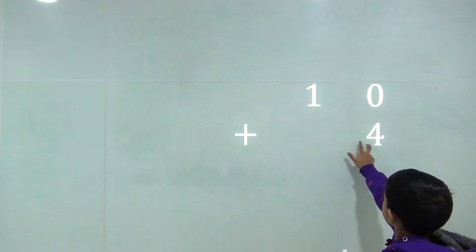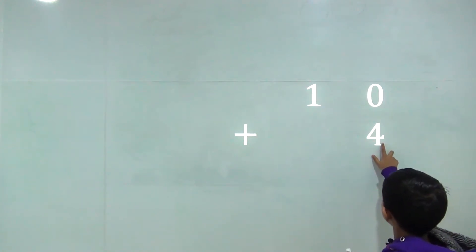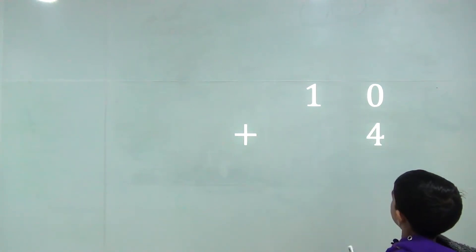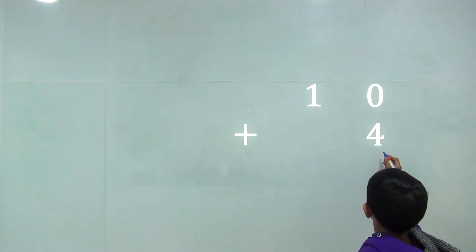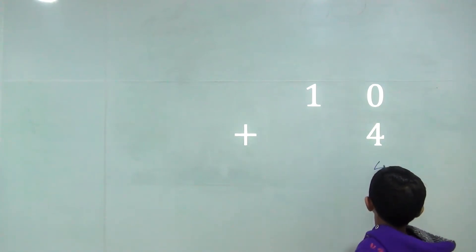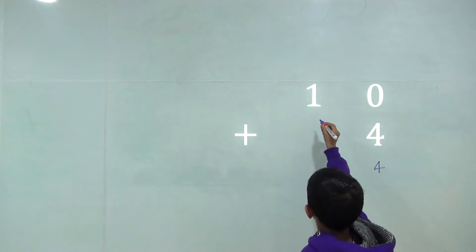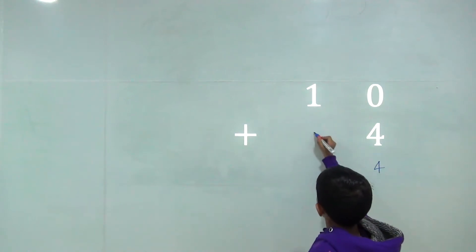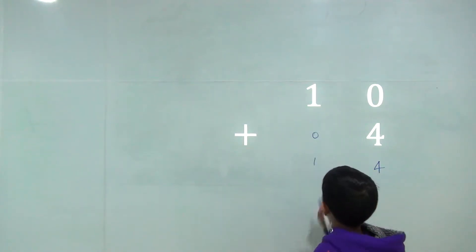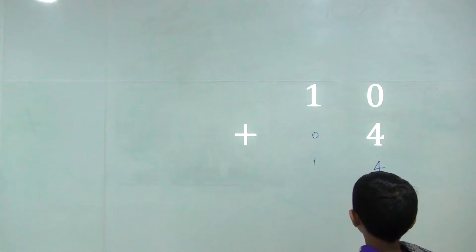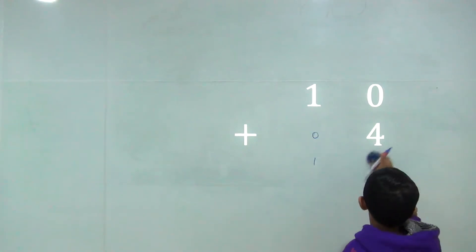Two digit number plus one digit number. Zero plus four is equal four and one plus zero is equal one. So the answer would be fourteen.